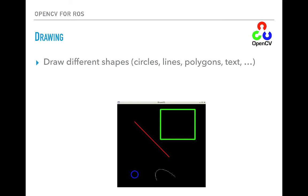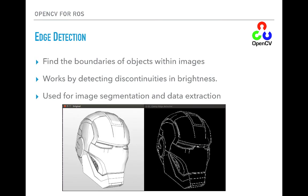It is also possible to do drawing with OpenCV. For example, it is possible to draw circles, lines, polygons, text, and many different shapes. In the practical lecture, we are going to do a little bit of drawing. Edge detection is also an important operation in computer vision. It consists in finding the boundaries of objects within the image, and works by detecting discontinuities in brightness. Edge detection is used for image segmentation and data extraction.